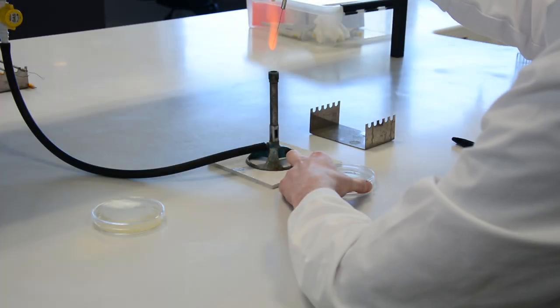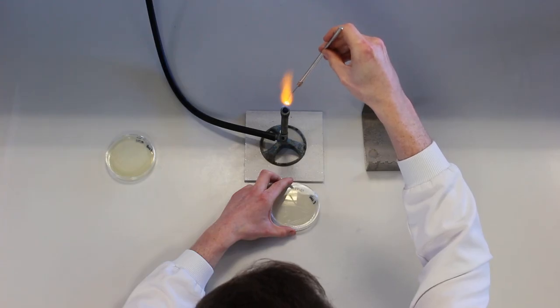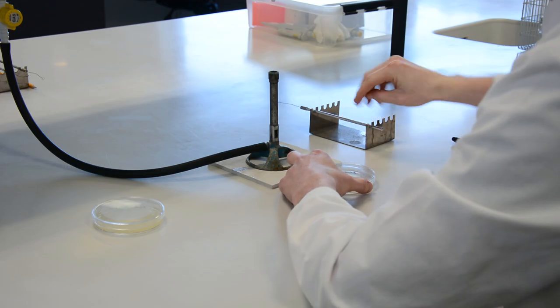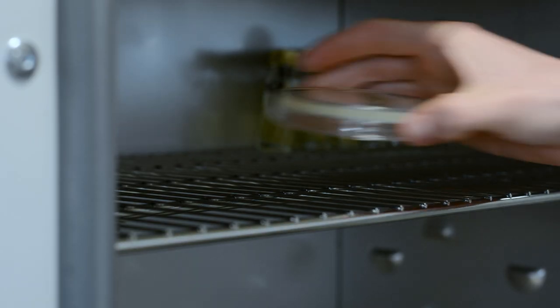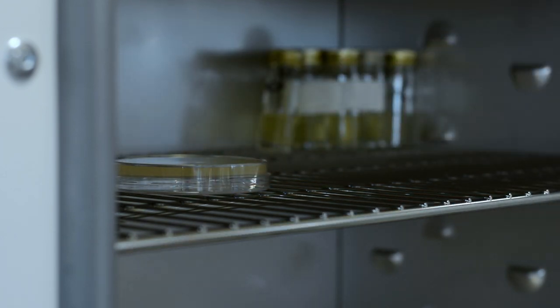Streak plates are inverted to avoid condensation flooding the agar and incubated usually overnight. 37 degrees Celsius is the incubation temperature used for bacteria capable of growing in the human body. If material has been collected from environmental sources, then a lower temperature may be used.